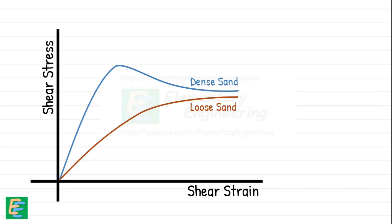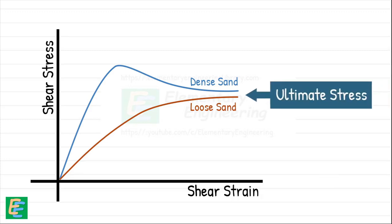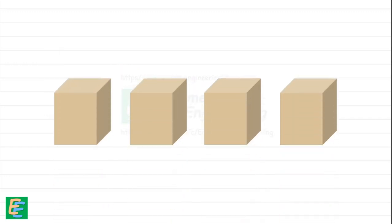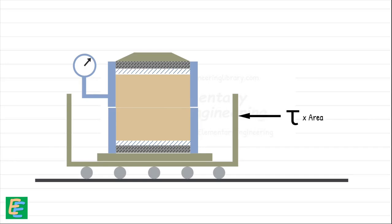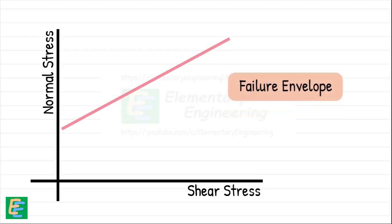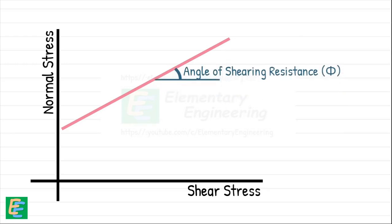The ultimate shear stress for both dense and loose sands, when tested under similar conditions, is roughly the same. Failure is considered at peak stress, or for soils that never reach a peak, at 20% shearing strain. With data from multiple specimens, we determine the shear stress required to cause failure for each normal stress. Plotting these points on a graph of shear stress versus normal stress and connecting them with a straight line gives us the failure envelope. The angle of this envelope from the horizontal gives us the angle of shearing resistance φ, and its intercept on the vertical axis is the cohesion intercept c.